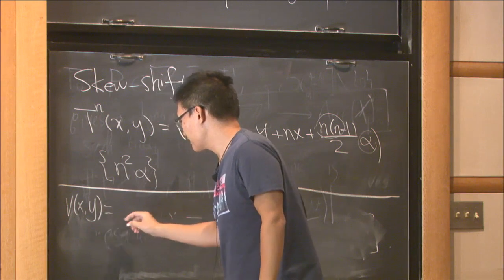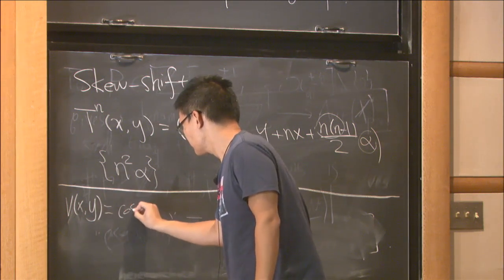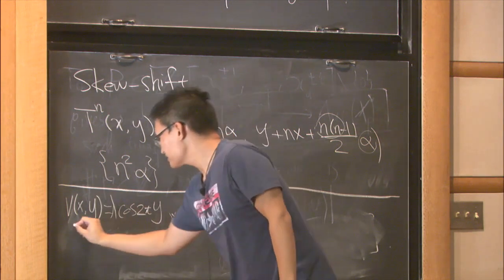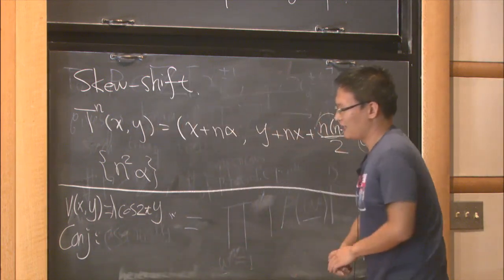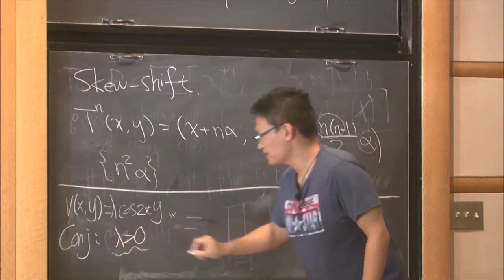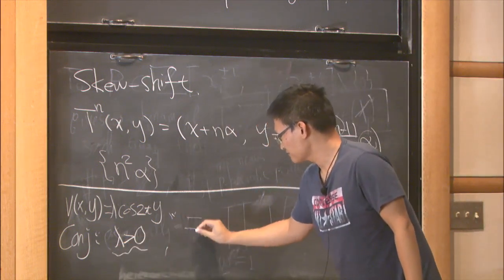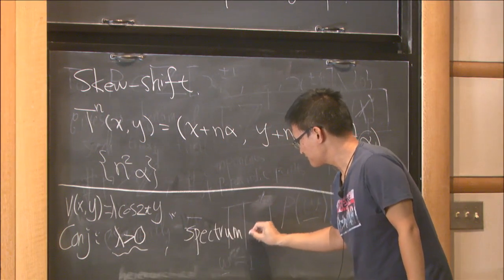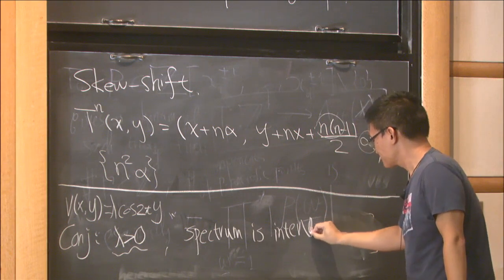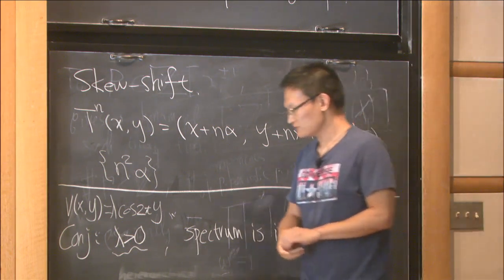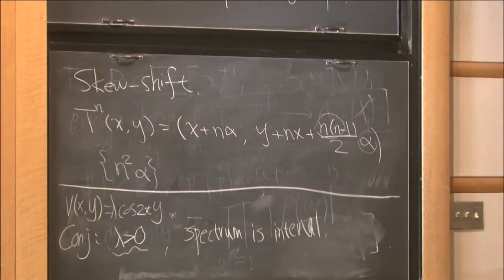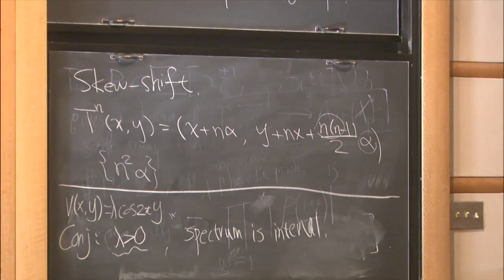For example, if we take this very simple potential, the conjecture is for any λ greater than zero, for any non-trivial coupling constant, the spectrum is the interval. So there are some partial results about, there are some partial results now, which shows the spectrum contains the interval when λ is very large. However, it's far away from complete. Because this conjecture is for all the coupling constant λ and the conjecture is about the spectrum is a single interval, not only contain intervals.